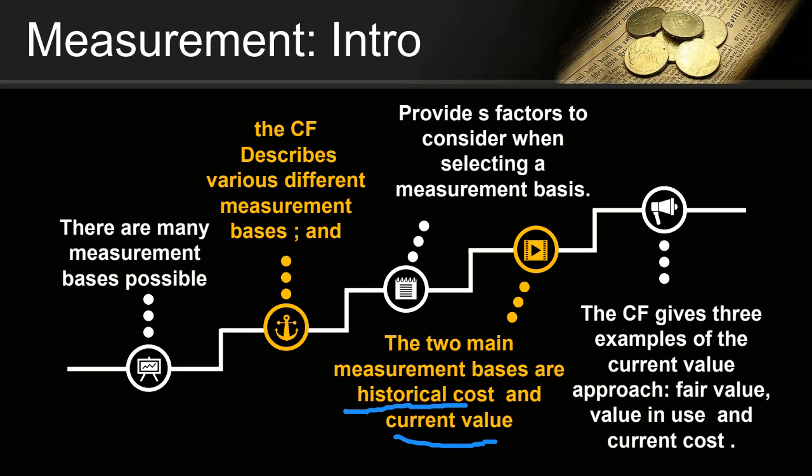It doesn't always mean that these are the only ways that exist, but these are the only allowable ways. The important thing we need to understand is that we need to be able to represent all of our assets, liabilities, expenses, incomes, and equity in a RAND amount. We must have a RAND-denominated figure, and in order to do that, we use one of the different methods as our vehicle.